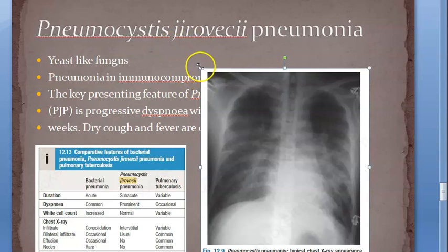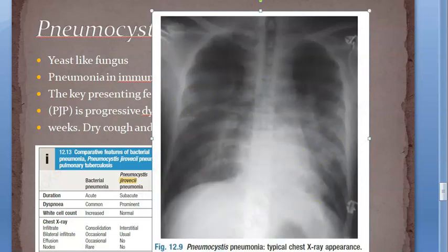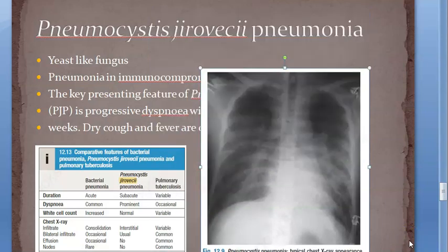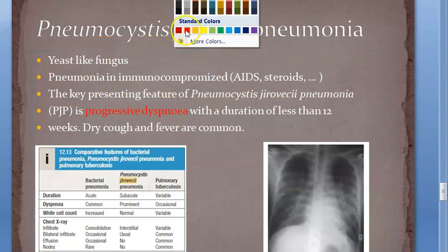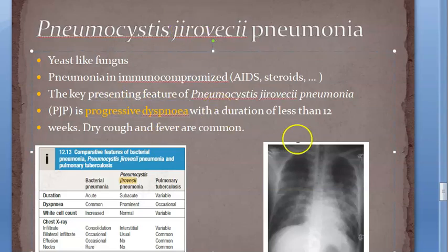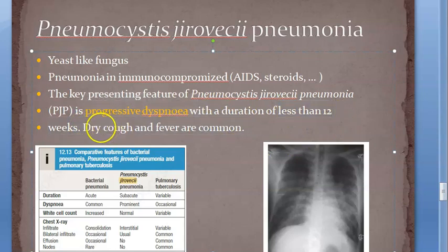It causes interstitial bilateral infiltrates - it affects both sides equally. What will happen to this patient? He cannot breathe, so he will have difficulty breathing - dyspnea. This is progressive dyspnea: as the disease proceeds, it becomes worse. This progresses over less than 12 weeks; before that, the person will be totally fine.